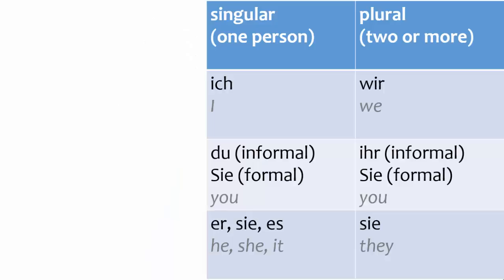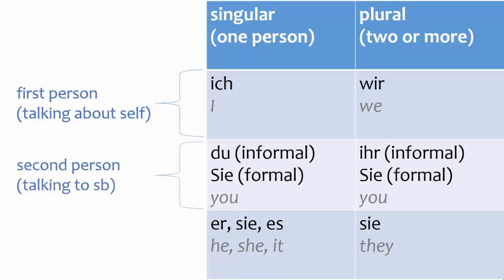In order to use these two words correctly, first you need to understand the difference between the first, second, and third-person forms of address. The first person is used to talk about yourself, or yourself and others. The second person is used to talk to someone — you can talk to one person or to more than one person. The third person is used to talk about others.